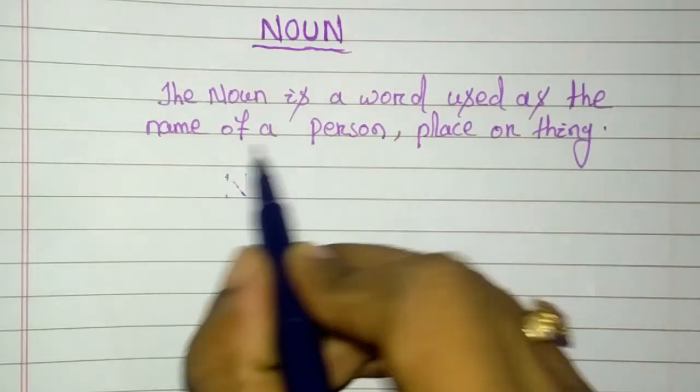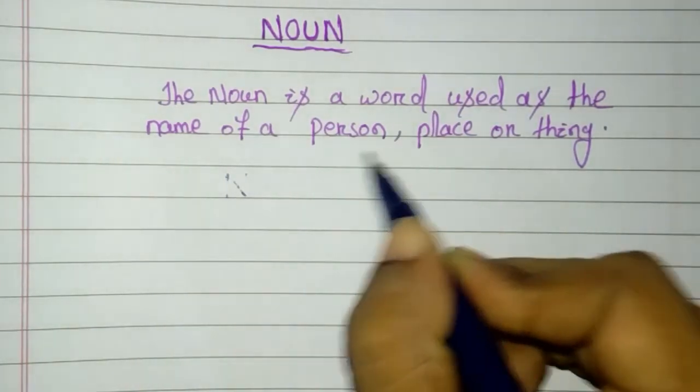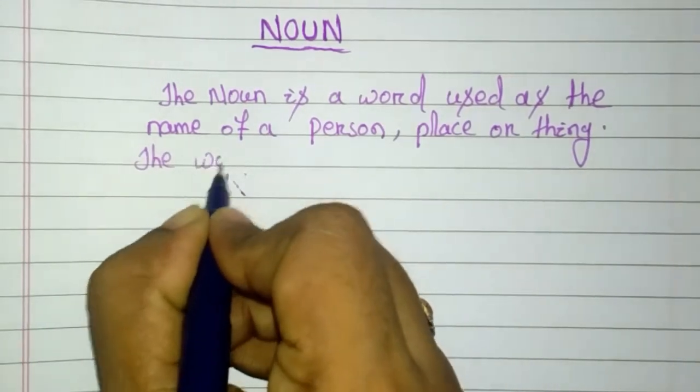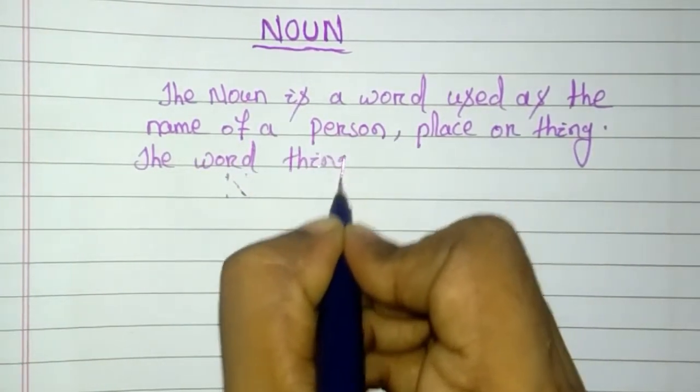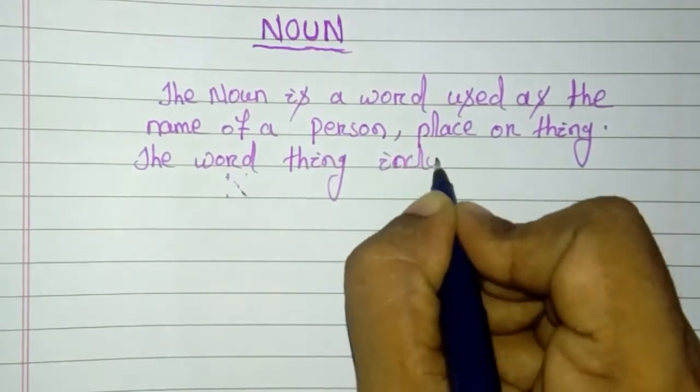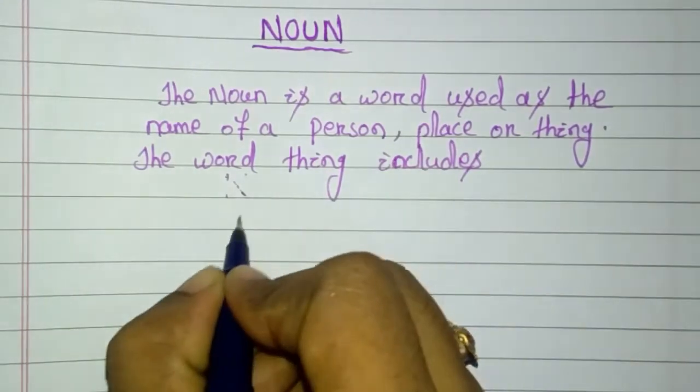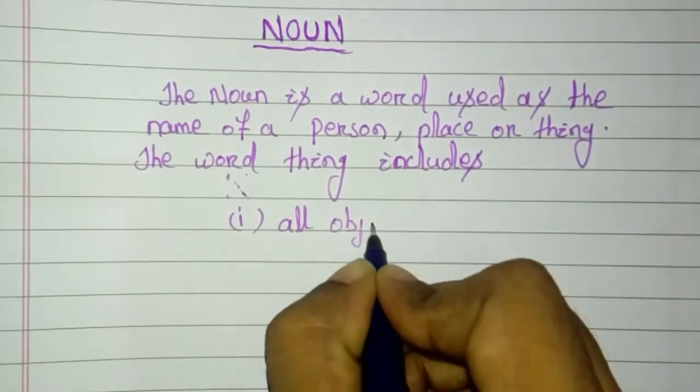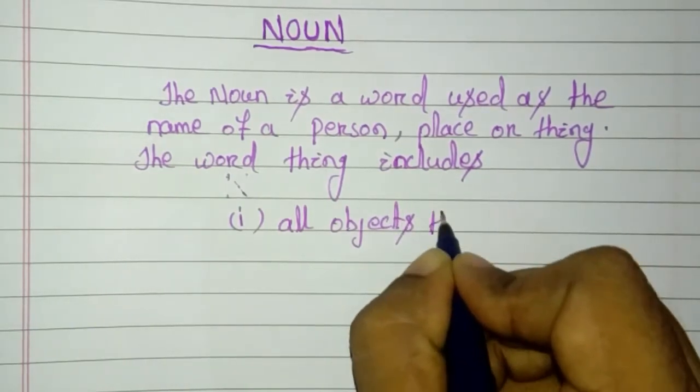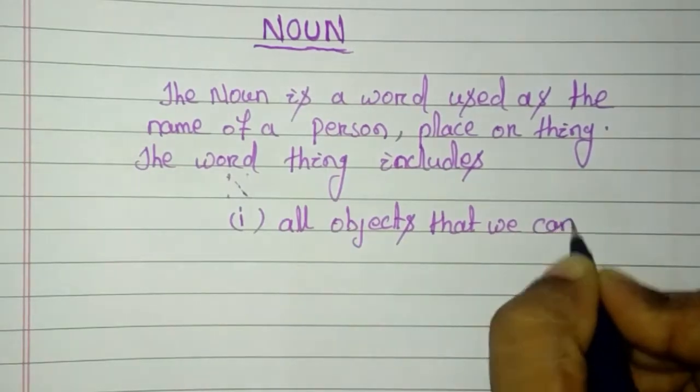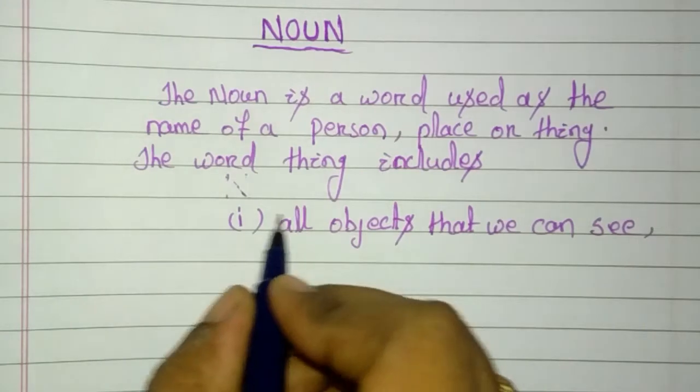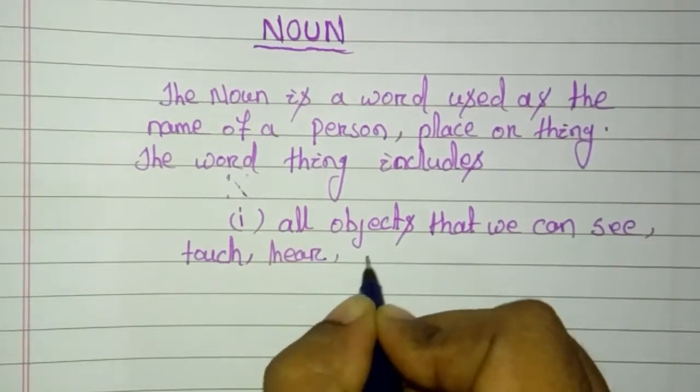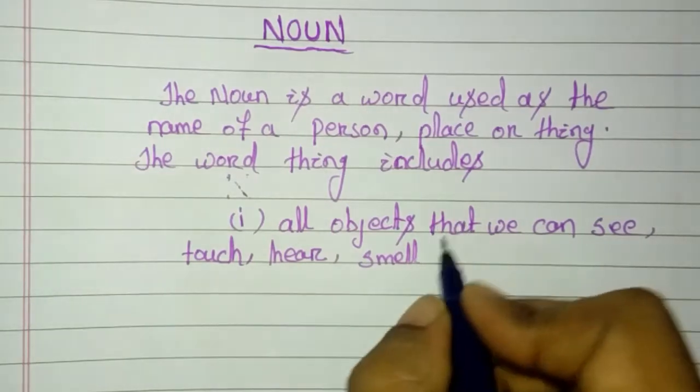So you know what is the name of a person. Let me explain about name of place or thing. The word thing includes first one is all objects that we can see, touch, hear, smell or taste.